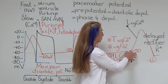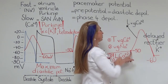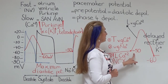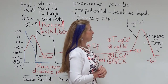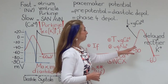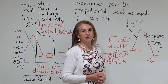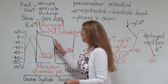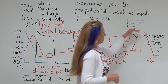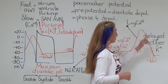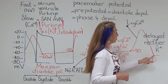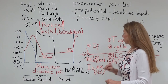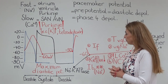When we reach the threshold, the action potential starts. Depolarization is produced by the usual L-type voltage-gated calcium channels, and the repolarization phase is produced by delayed rectifier potassium channels, which are also responsible for repolarization in nerve action potentials and fast action potentials. The potassium efflux from delayed rectifier channels brings us to the maximum diastolic potential, which triggers the hyperpolarization-induced funny current and IB current, and the new cycle begins.